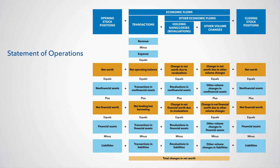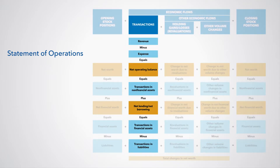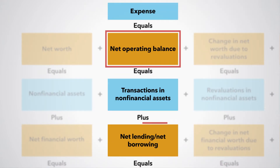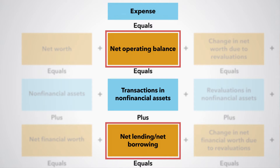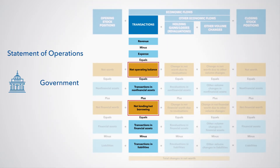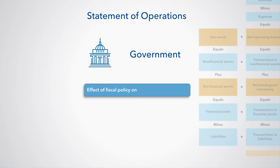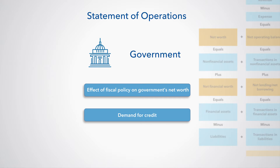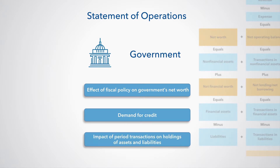The statement of operations provides a summary of all the transactions or operations, along with the principal balancing items for transactions: the operating balance and net lending or net borrowing. Thus, for government, the statement of operations indicates the effect of fiscal policy on government's net worth, government's demand for credit, and the impact of current period transactions on government's holdings of assets and liabilities.